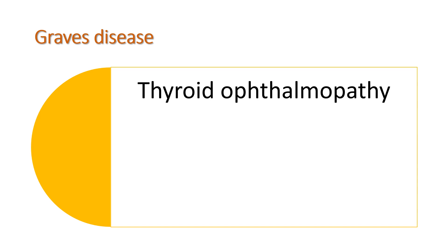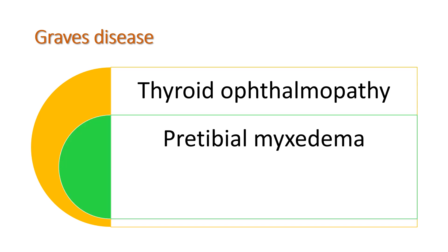An important feature is thyroid ophthalmopathy. It is mainly due to the increased production of cytokines — mainly interferon, tumor necrosis factor, and interleukin-1. This activates fibroblasts, increasing the accumulation of glycosaminoglycans, which produces exophthalmos.